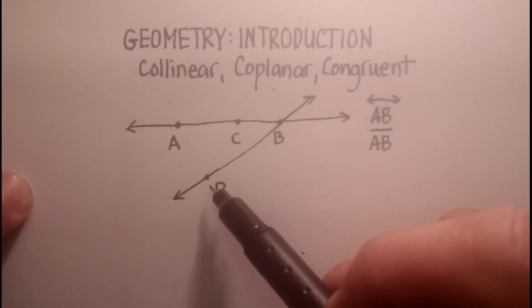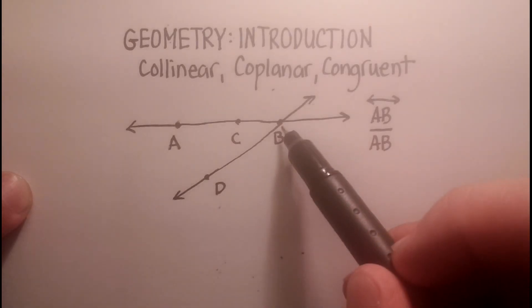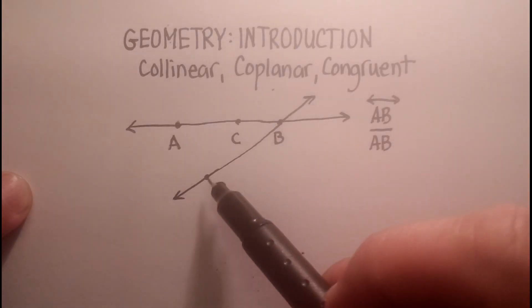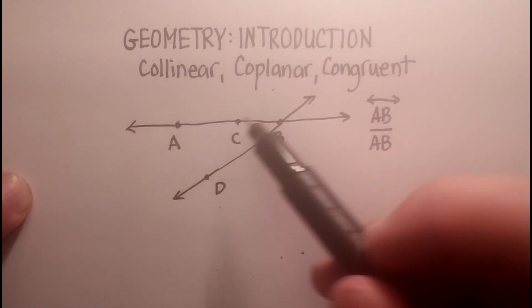So now D is collinear with B, all right? But it is not collinear with A and C.